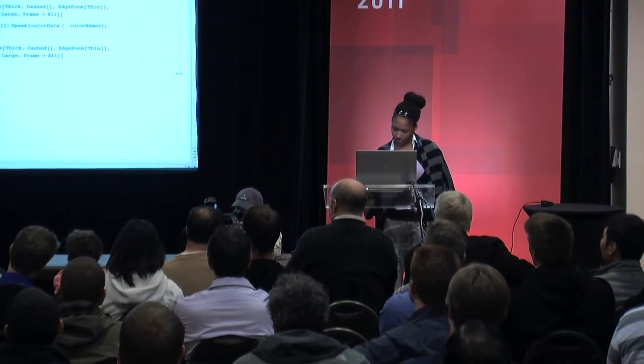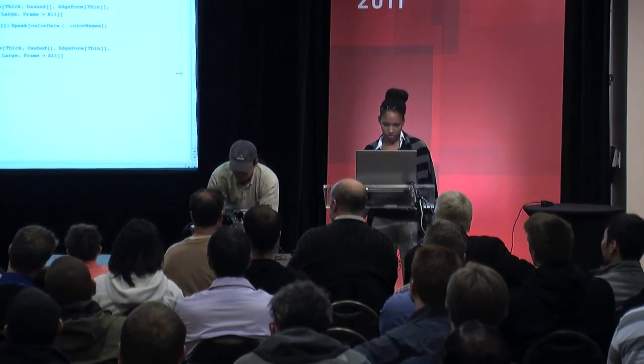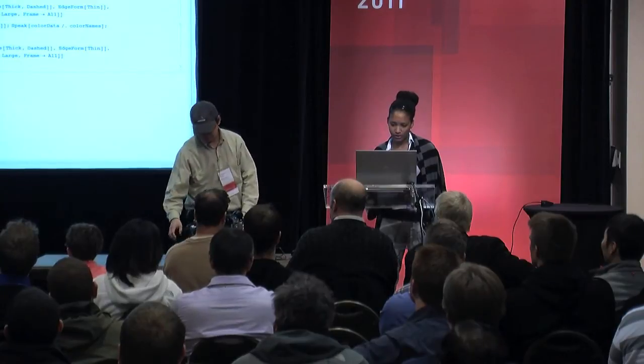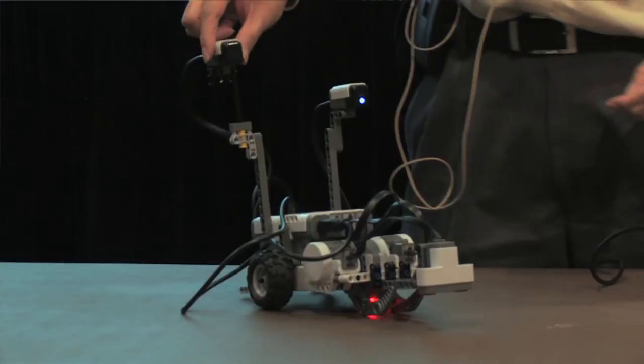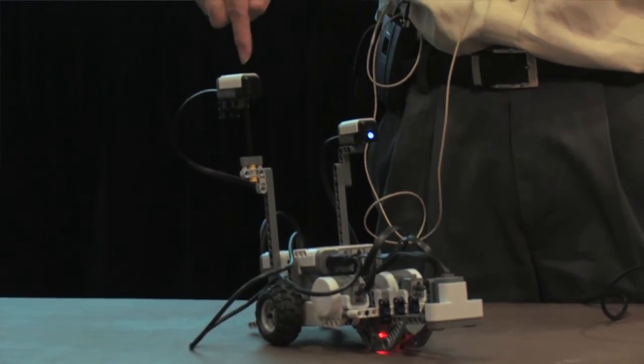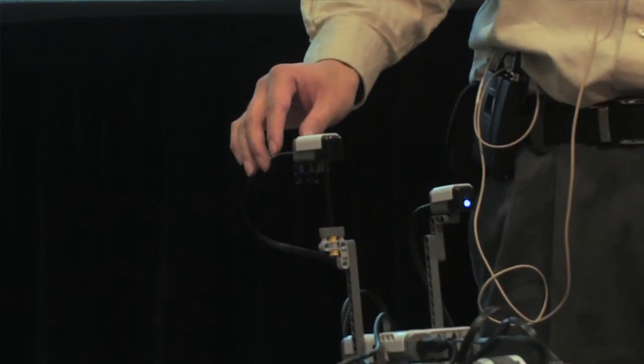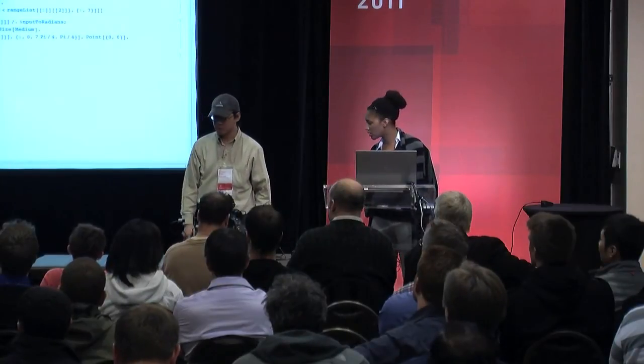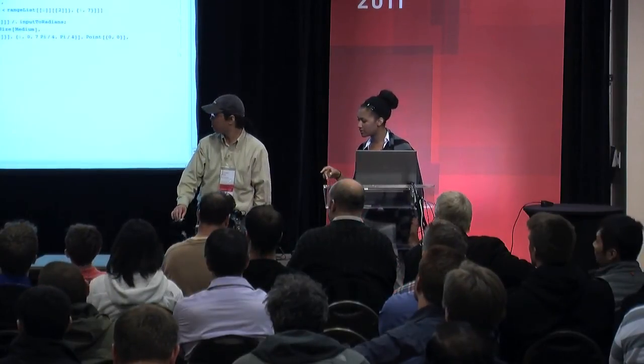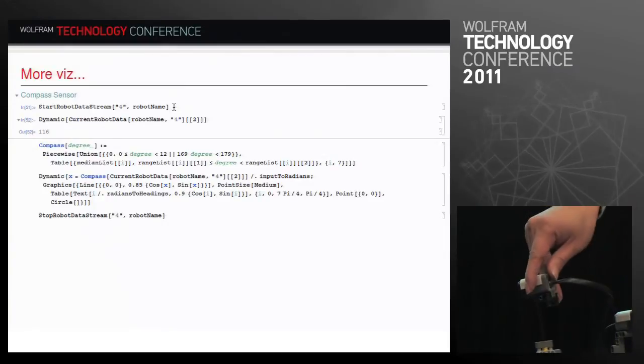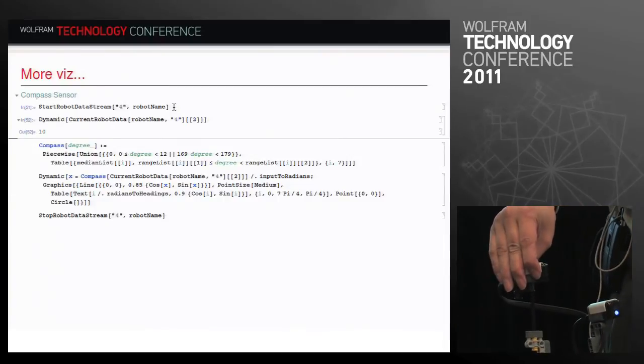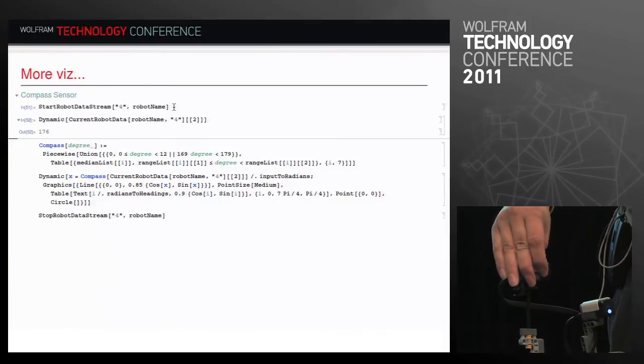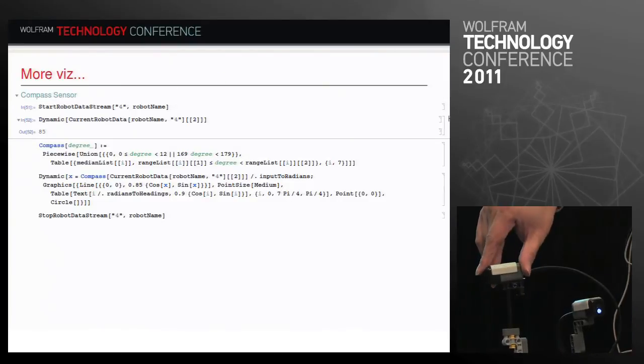We'll do some more visualization. We also have a compass sensor hooked up here. We'll start streaming from the compass sensor. And again, we can see what this raw data looks like. If you spin it around, zero is supposed to be true north. We'll see if it's actually correct. What does it think north is? Not bad. North is that way. And everything else is relative to what it believes true north is.